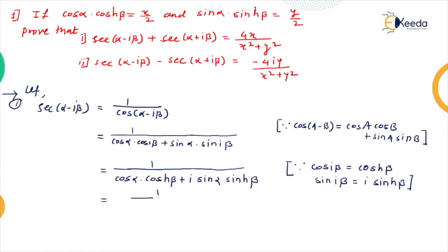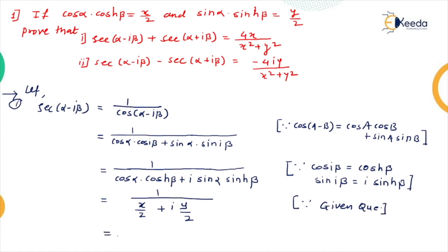Substituting the given values: cos α · cosh β = x/2 and sin α · sinh β = y/2, so the denominator becomes x/2 + iy/2 = (x + iy)/2. Therefore sec(α − iβ) = 1/[(x + iy)/2] = 2/(x + iy).